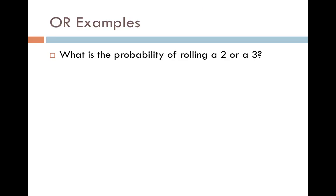Let's look at an example. What is the probability of rolling a 2 or a 3 on a regular die? Well, these are mutually exclusive. You can't be 2 and 3 at the same time. So I'll just add those together.